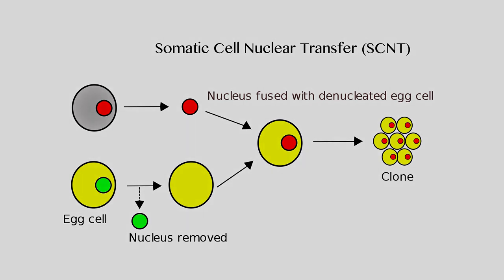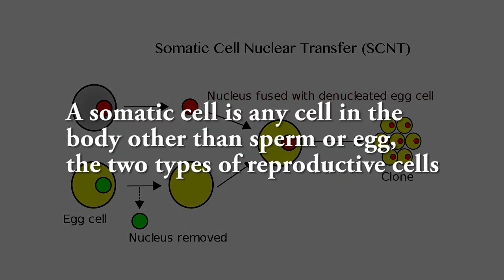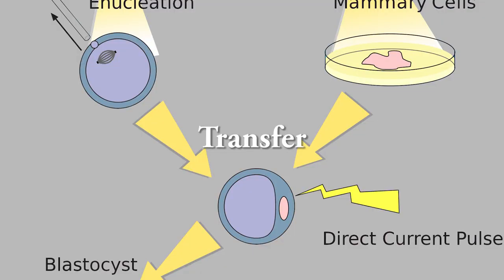Coming back to cloning — the somatic cell is any cell in the body other than sperm or egg, the two types of reproductive cells. Reproductive cells are also called germ cells. In mammals, every somatic cell has two complete sets of chromosomes, whereas germ cells have only one complete set — the haploid number of chromosomes — that is, only 23 chromosomes, whereas somatic cells have 23 pairs of chromosomes.